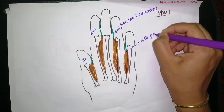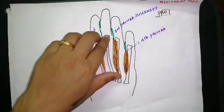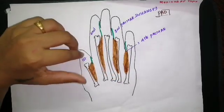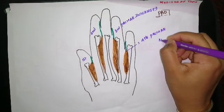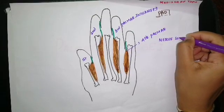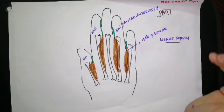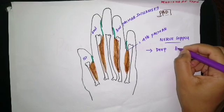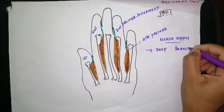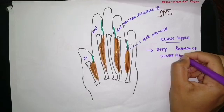Overall, there are four Palmar Interossei. There is no Interosseus for the central finger (middle finger), and the first one for the thumb is rudimentary. Regarding nerve supply — all Interossei, whether Palmar or Dorsal, are supplied by the deep branch of the Ulnar nerve.